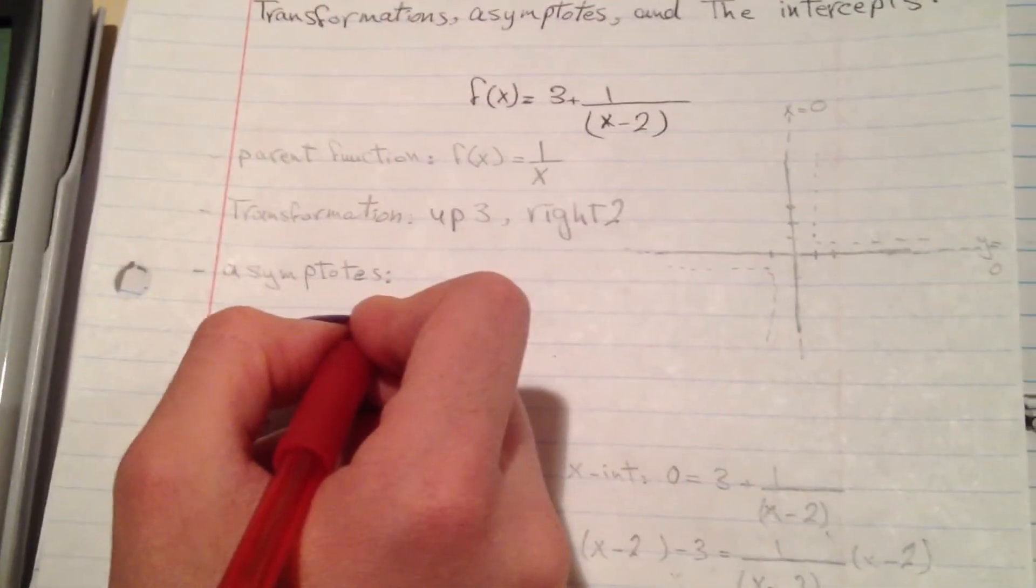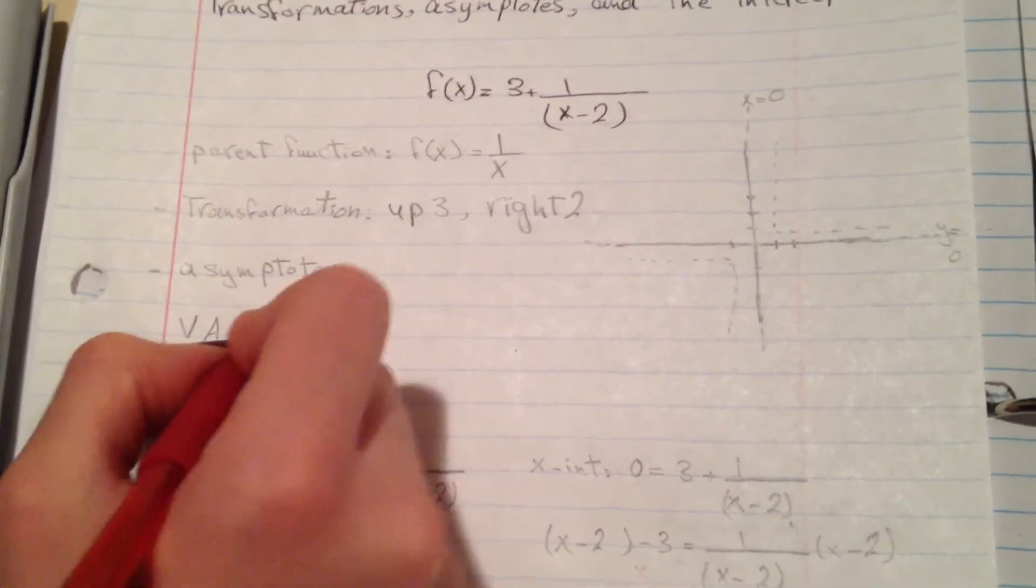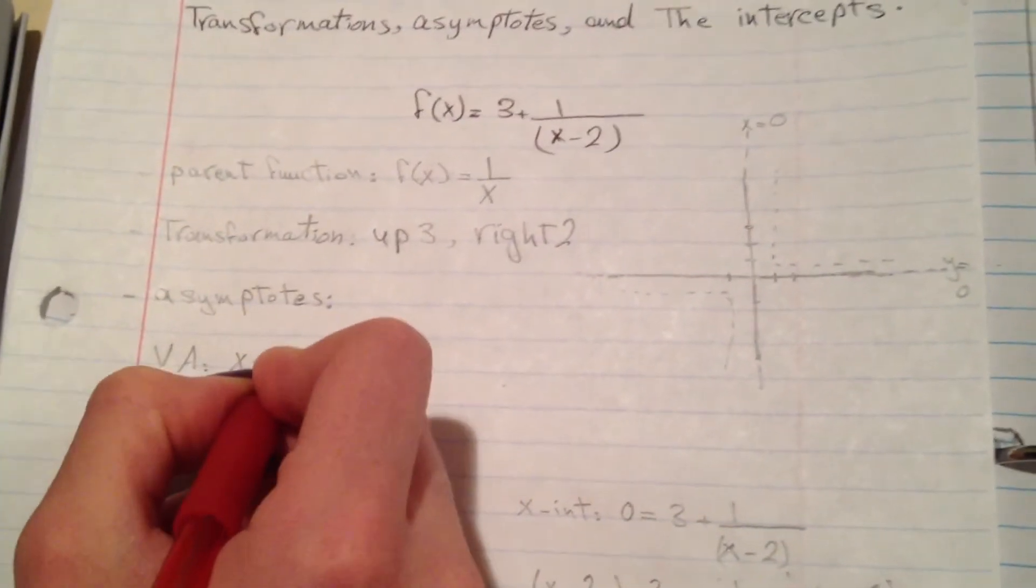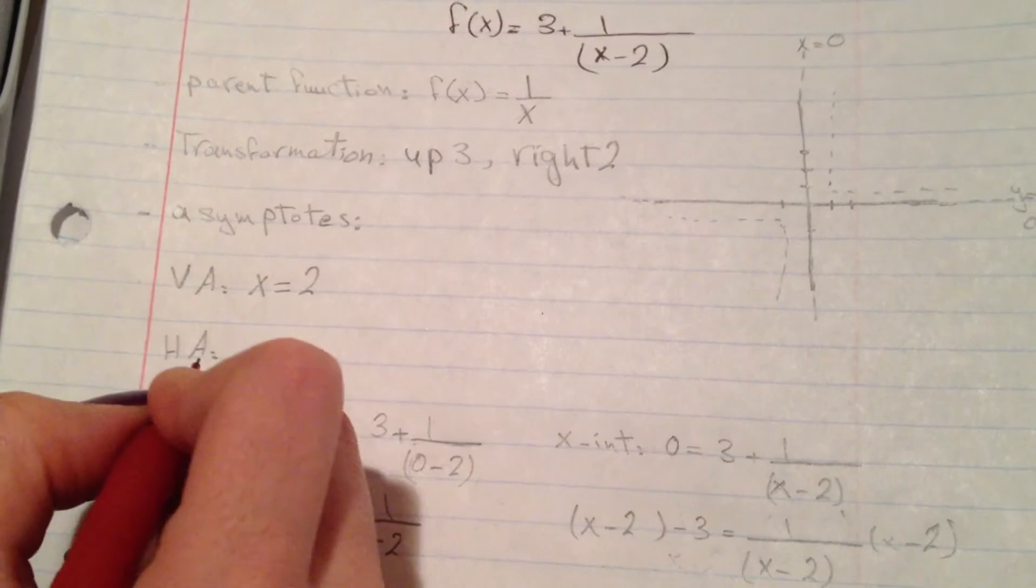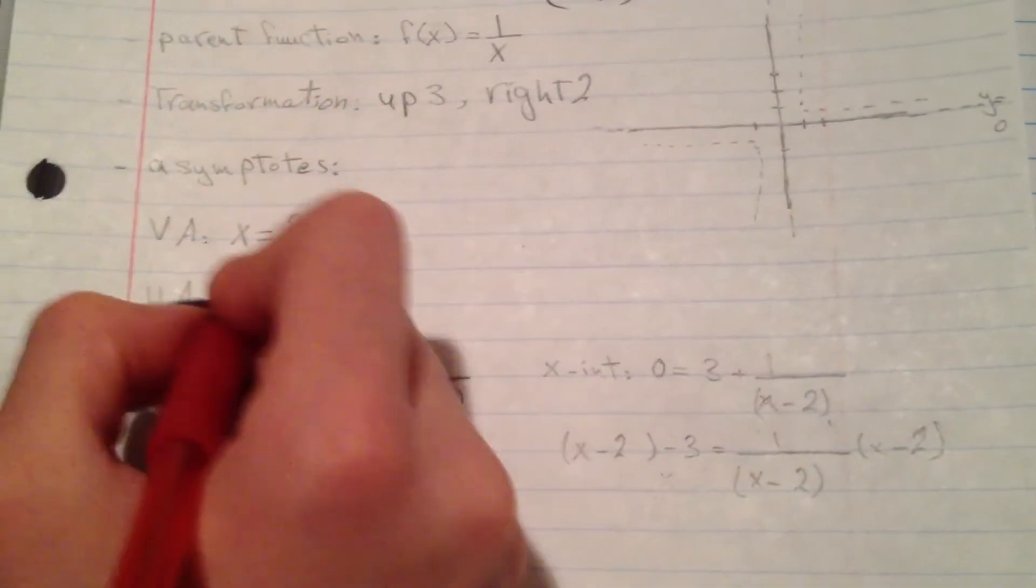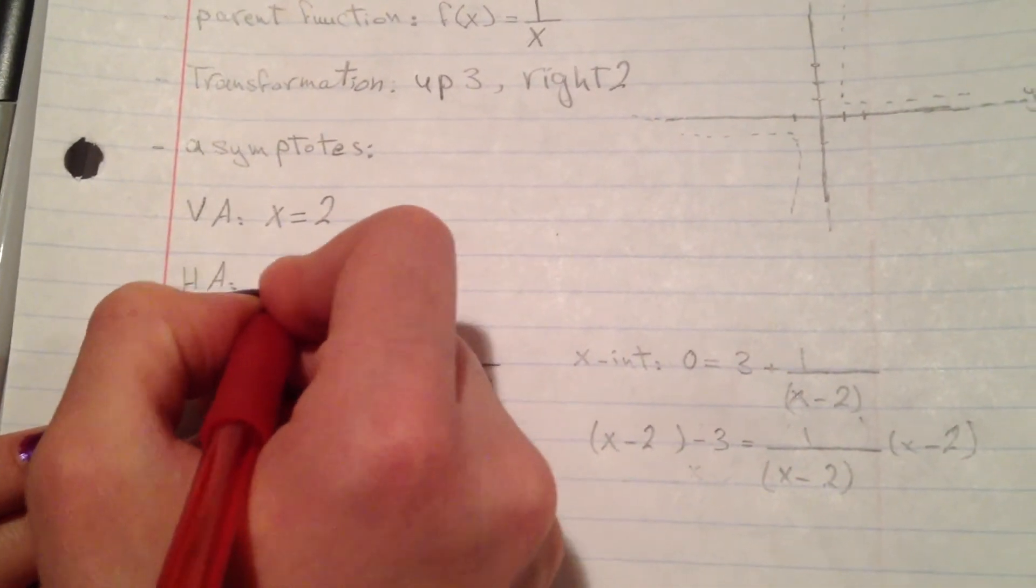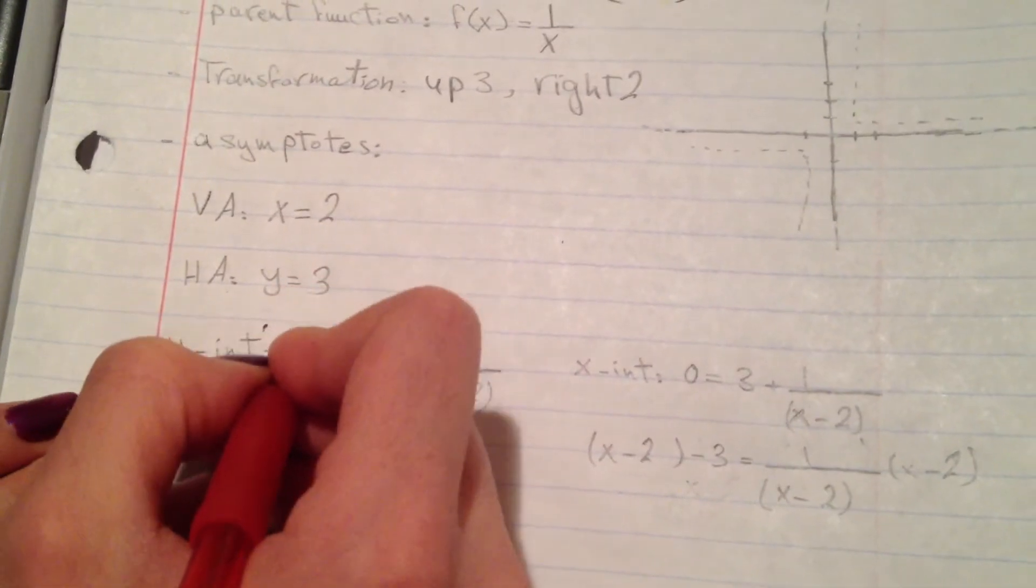For asymptotes, the vertical asymptote is x = 2 and the horizontal asymptote is y = 3.